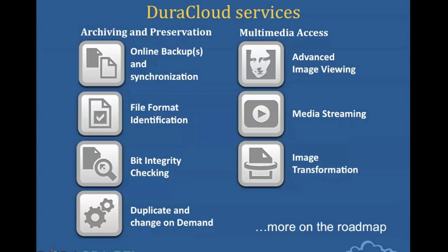On the archiving and preservation side, you can backup your content and then synchronize it across multiple cloud stores. Droid is enabled as a file format identification service and runs automatically as you ingest content. You can check the health of your files across the cloud stores as well as compare it to what's stored locally so that you know your content hasn't changed over time. You can also make copies of your content on demand from a primary storage provider into a secondary storage provider.